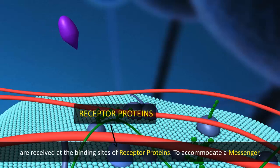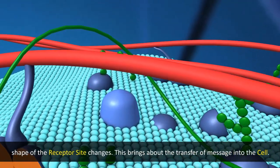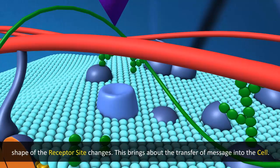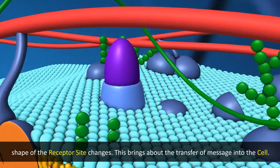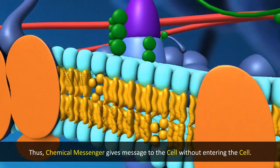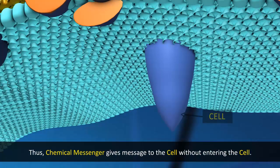To accommodate a messenger, the shape of the receptor site changes. This brings about the transfer of the message into the cell. Thus, the chemical messenger gives the message to the cell without entering the cell.